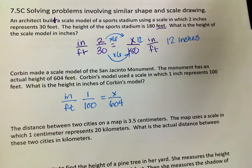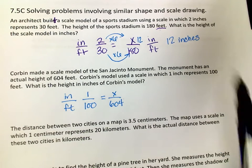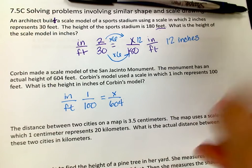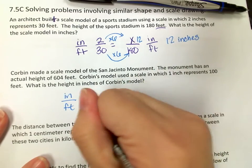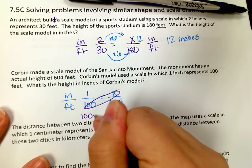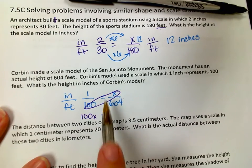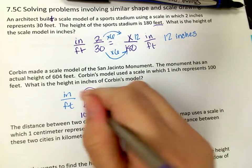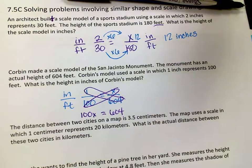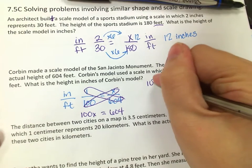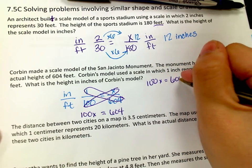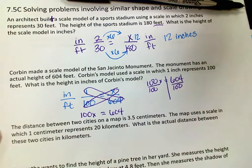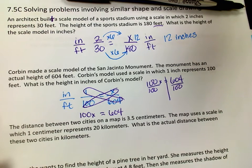I'm going to show you the cross products method to demonstrate a different approach. Using cross products: 100 times x equals 100x, and 1 times 604 is 604. Don't forget to write the equal sign — that's a big difference. So now I have the equation 100x equals 604.